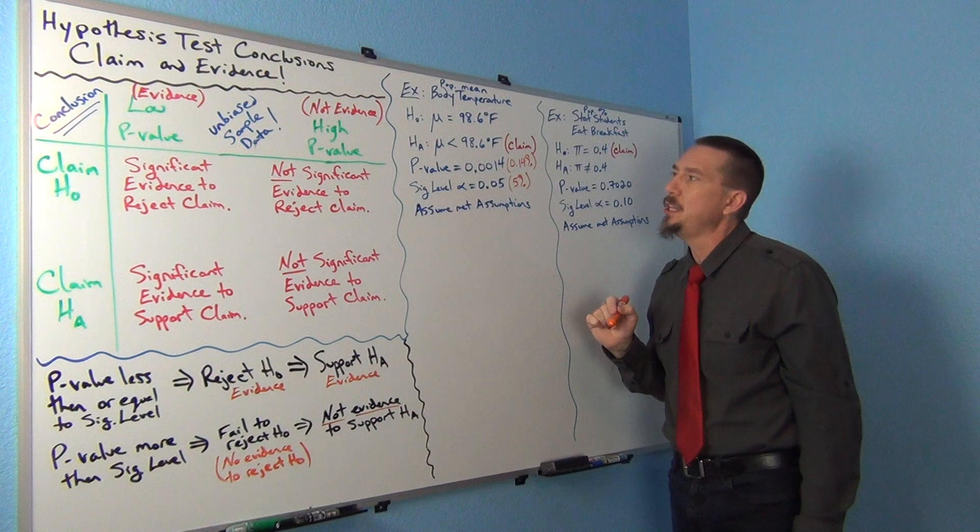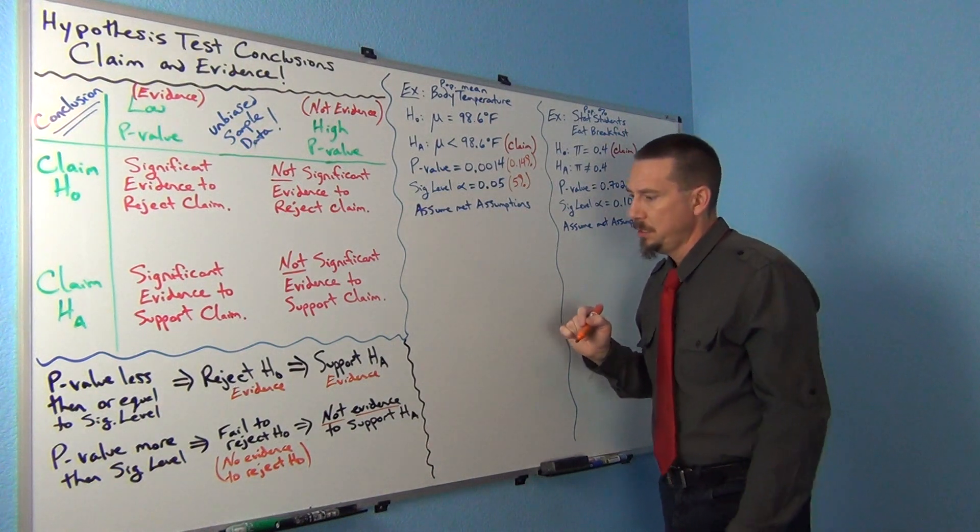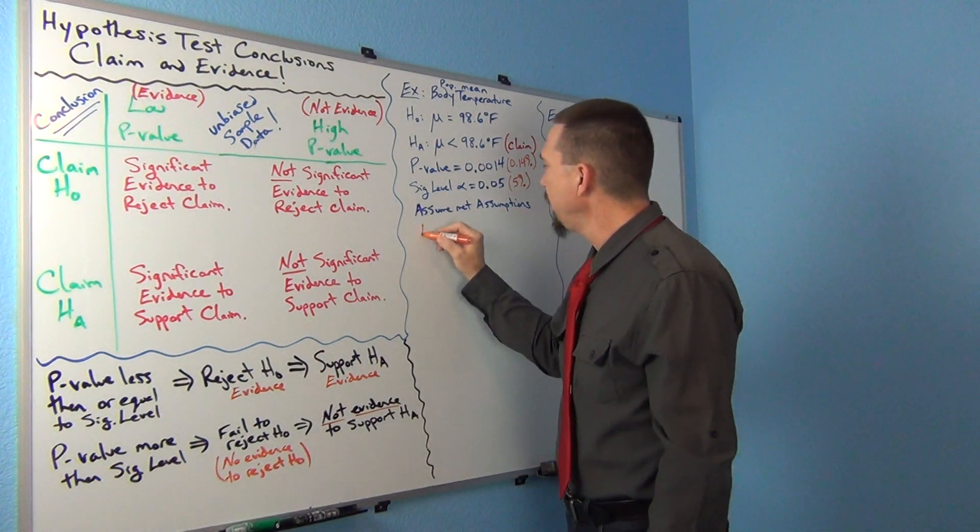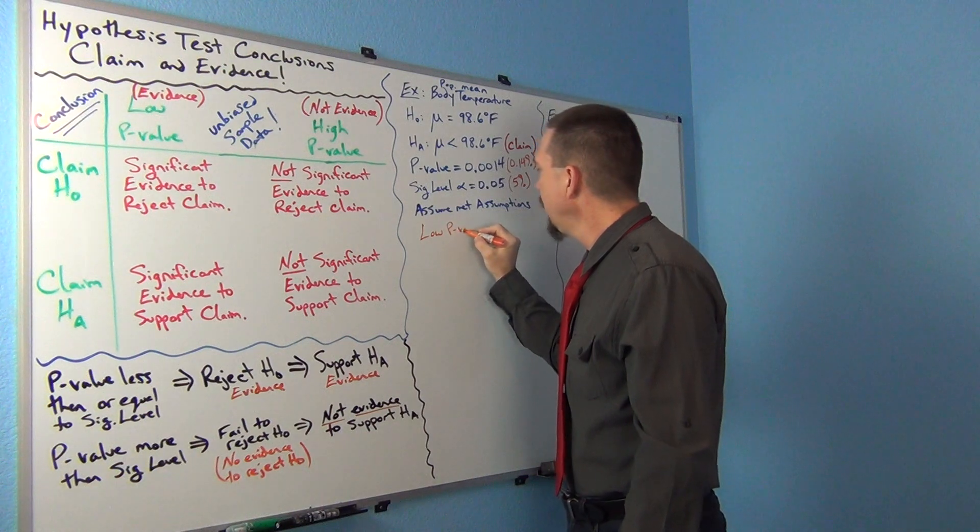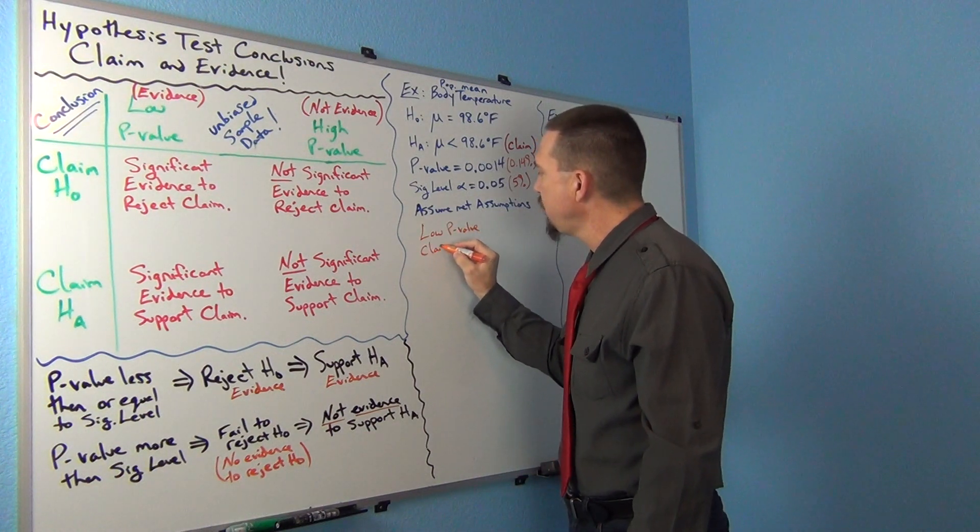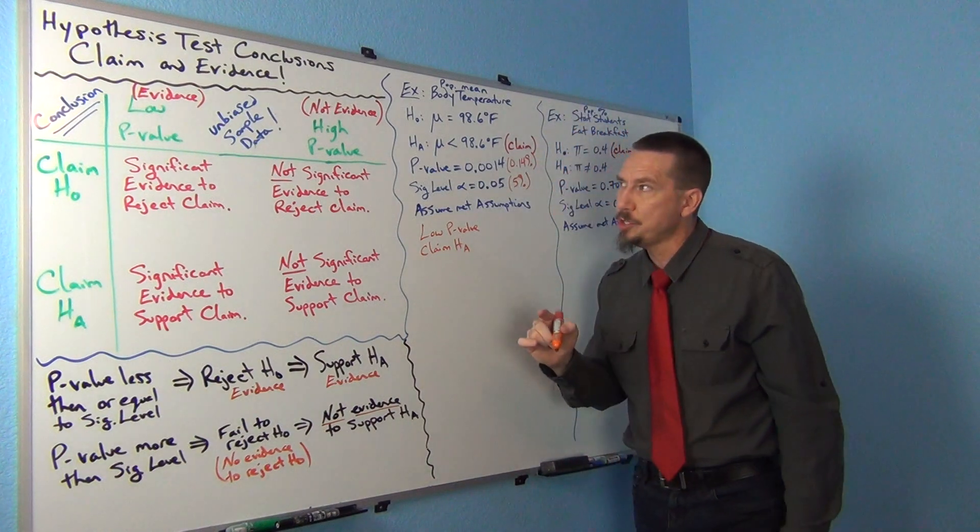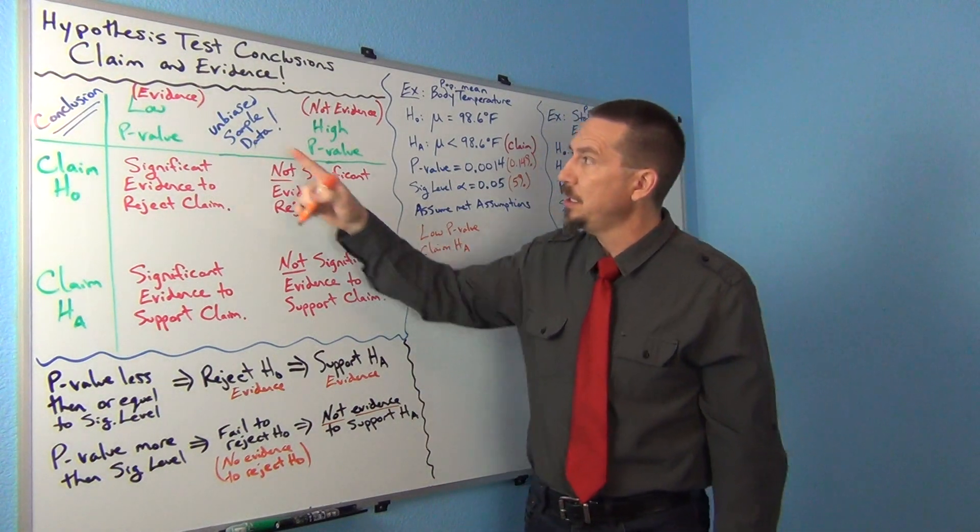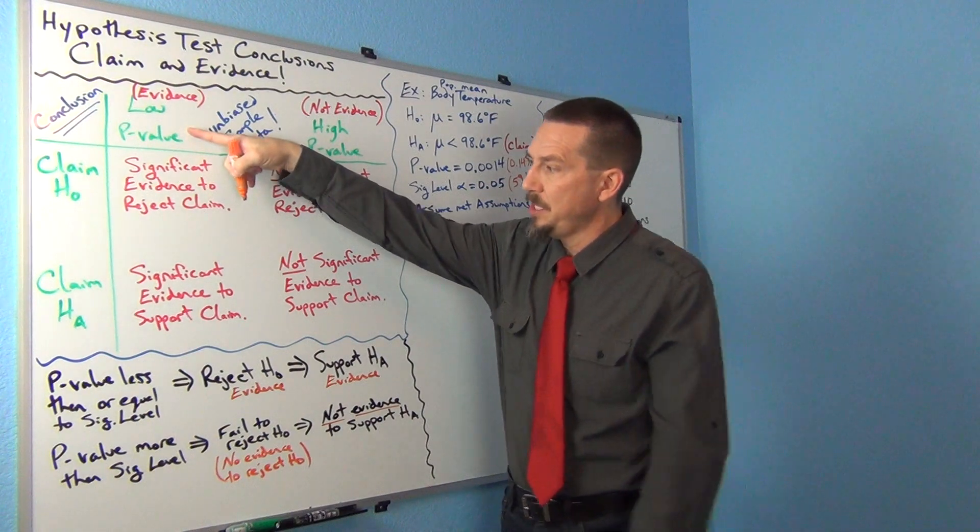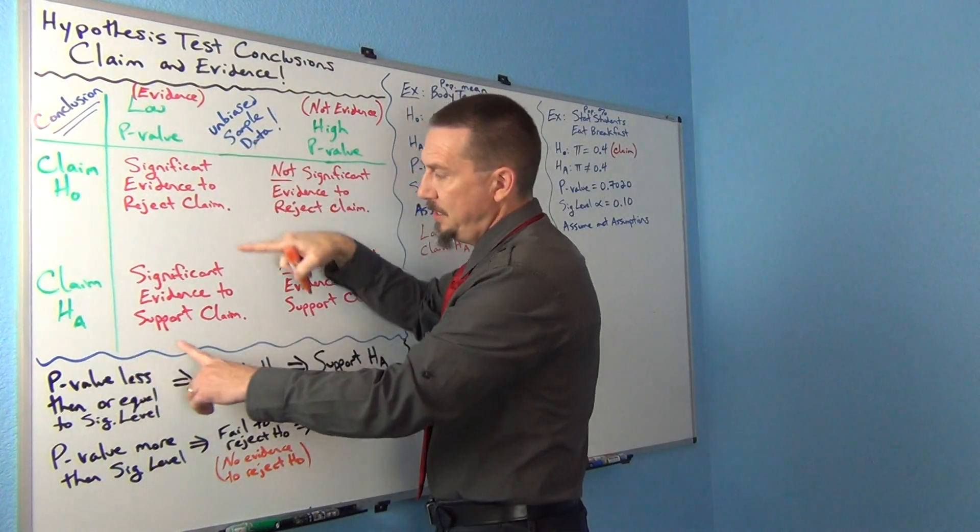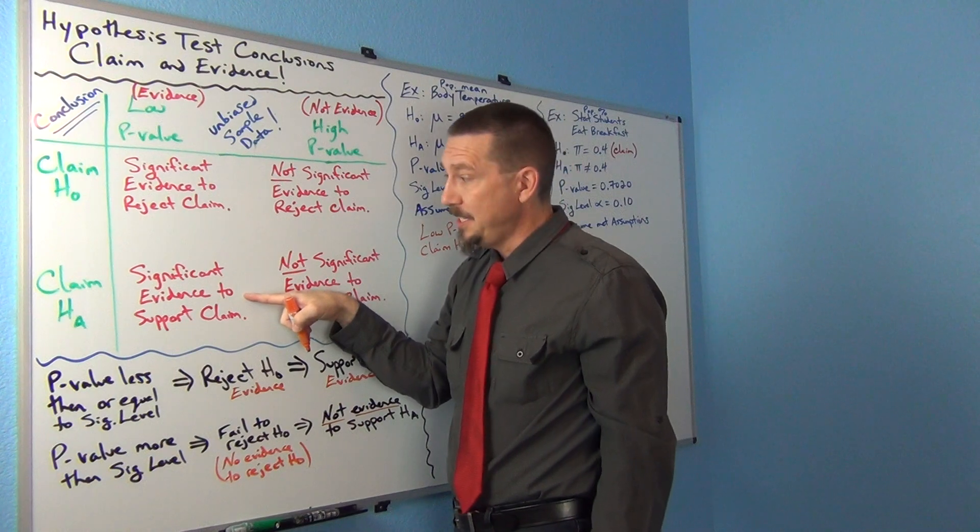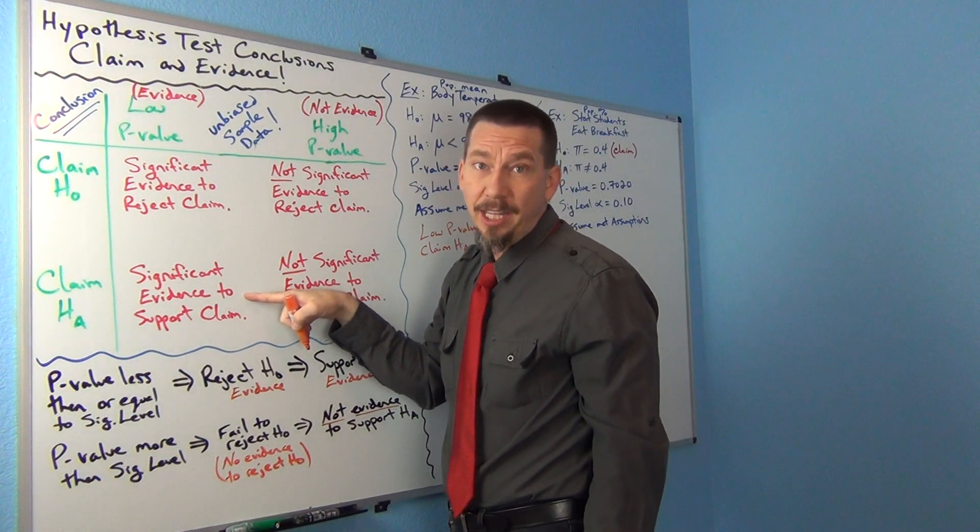So we definitely have a low p-value here. So we got a low p-value, and I know the claim is HA, the claim is the alternative hypothesis. So let's go back to our chart, right? We got a low p-value, and the claim is HA.